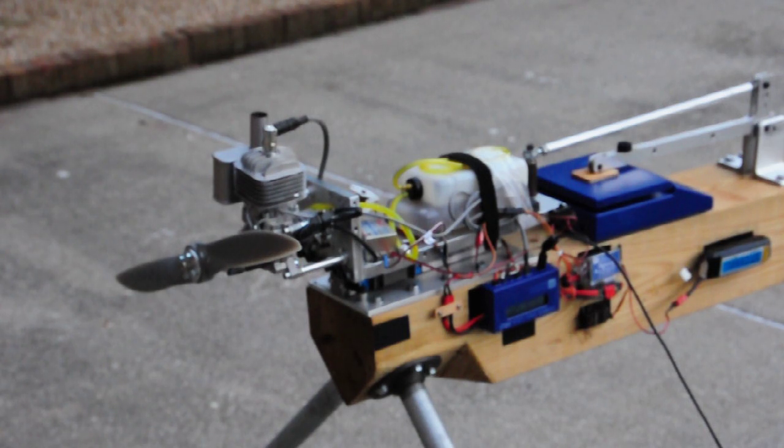For this test, we're running an APC 18x6 wide blade. This is a Funfly 3D propeller. Pretty light load for this engine, but the results are pretty amazing. It turns 8800 RPM producing 19 pounds of thrust. So we'll demonstrate that briefly.